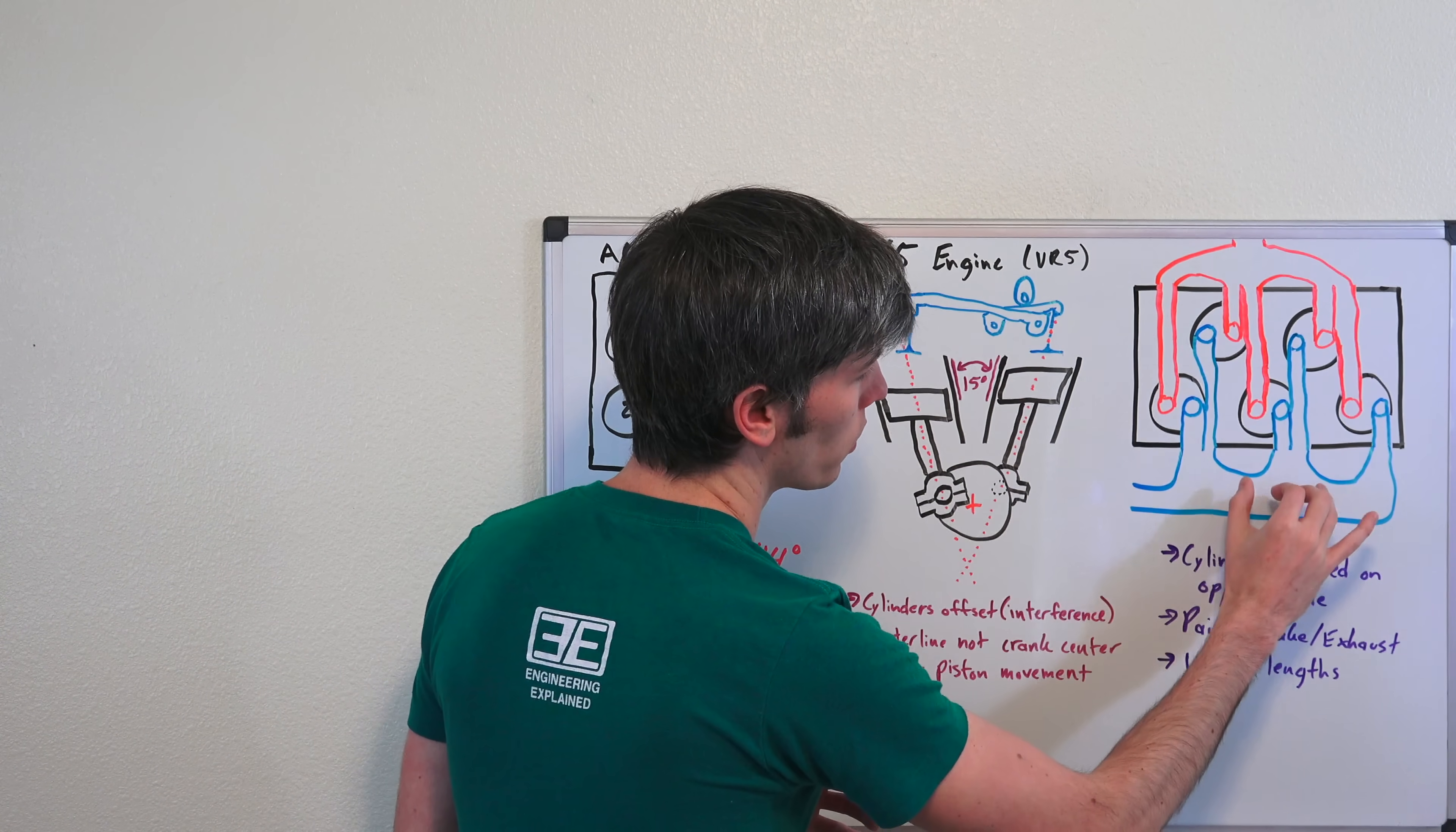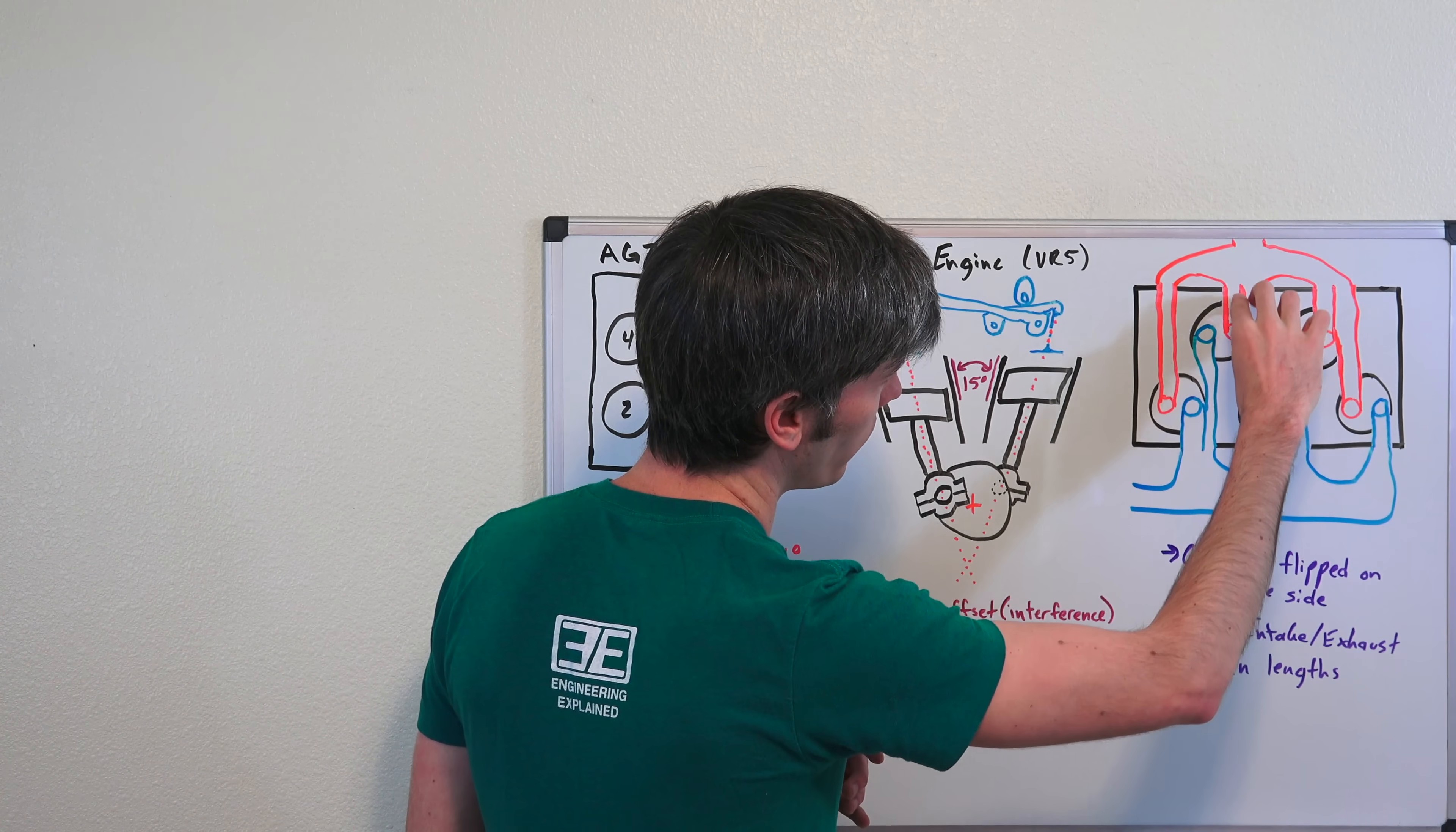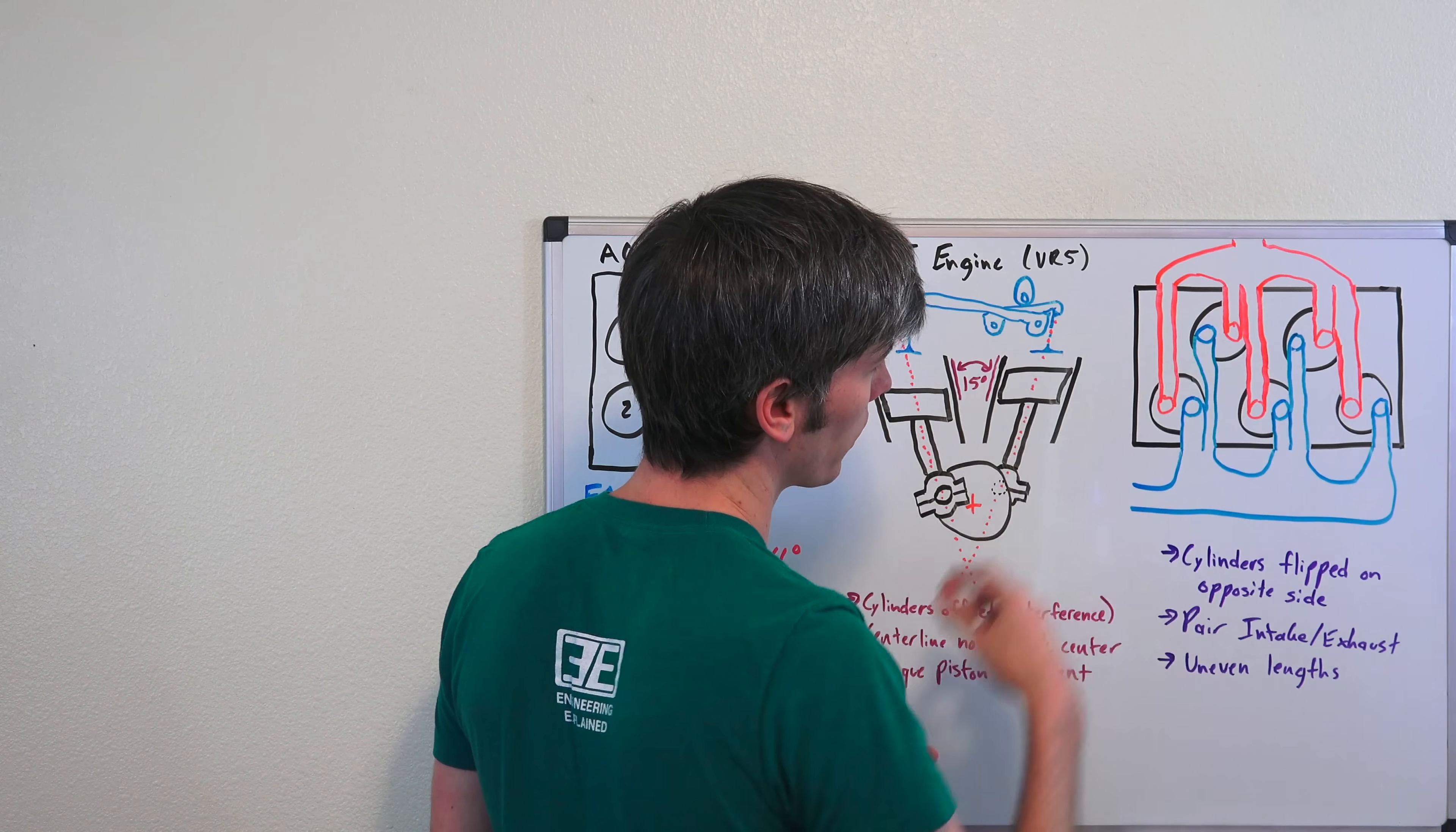You've just got your intake manifold on one side of the engine, your exhaust manifold on the other side of the engine, and then within the cylinder head, you can see you've got these paths. So it allows you to pair up two of the intake valves together, pair up two of the exhaust valves together as it's exiting the engine within that cylinder head. Makes it simpler within the cylinder head to have this design when you have those cylinders switched on the other side, so you can pair up the intake and exhaust valves.